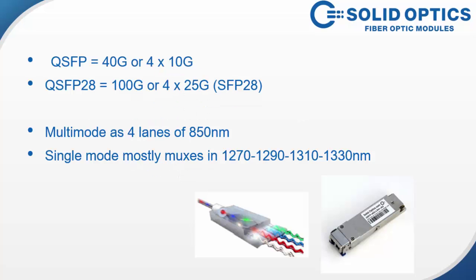What is the QSFP? The normal QSFP is 40 gig — a line rate 40 gig Ethernet, or 4 times 10 gig. QSFP28 is the successor which does 100 gig or 4 times 25 gig.